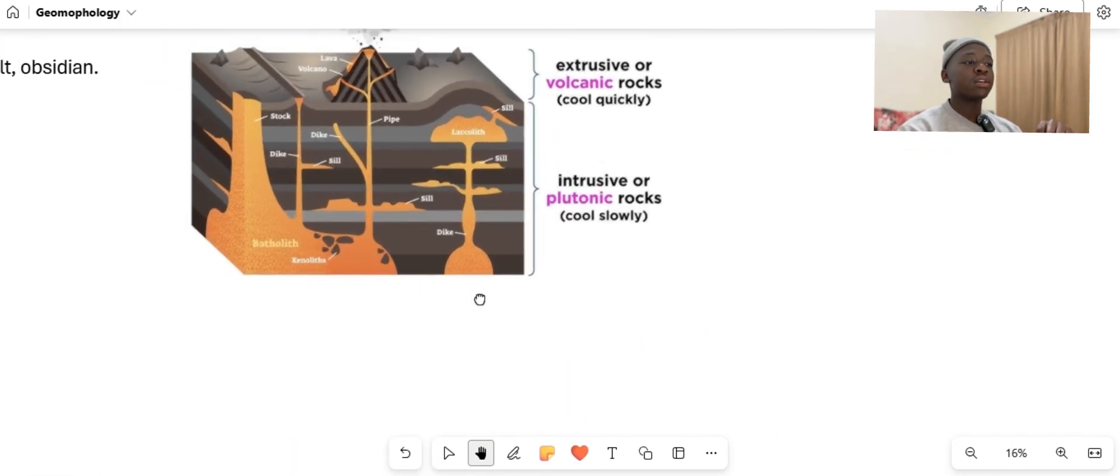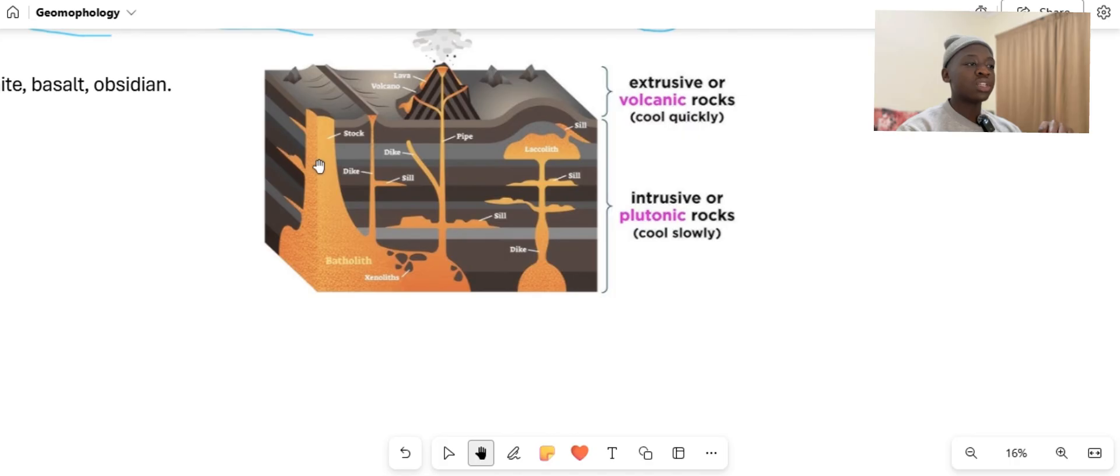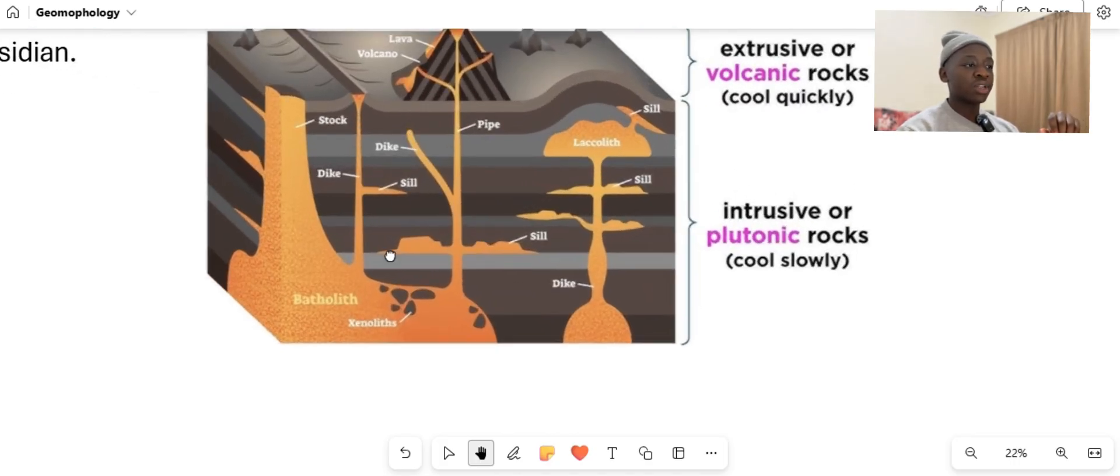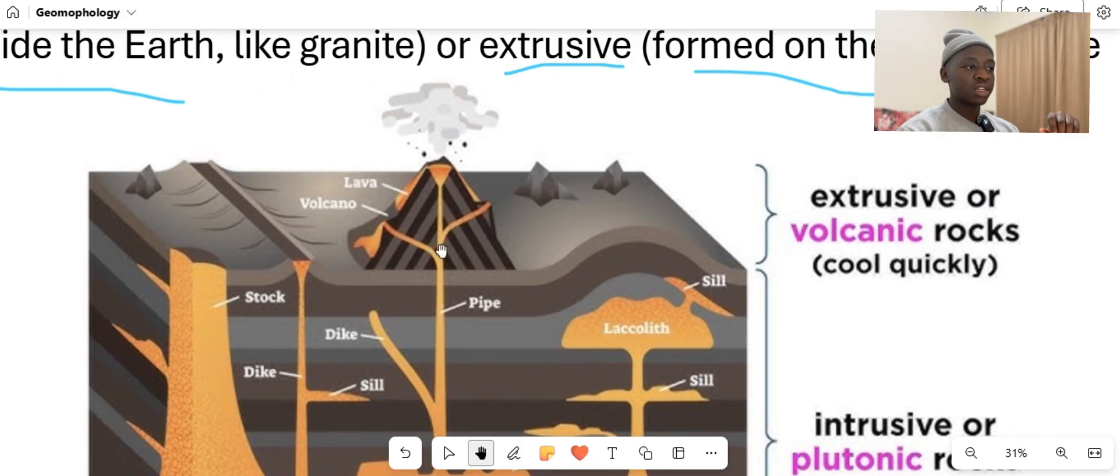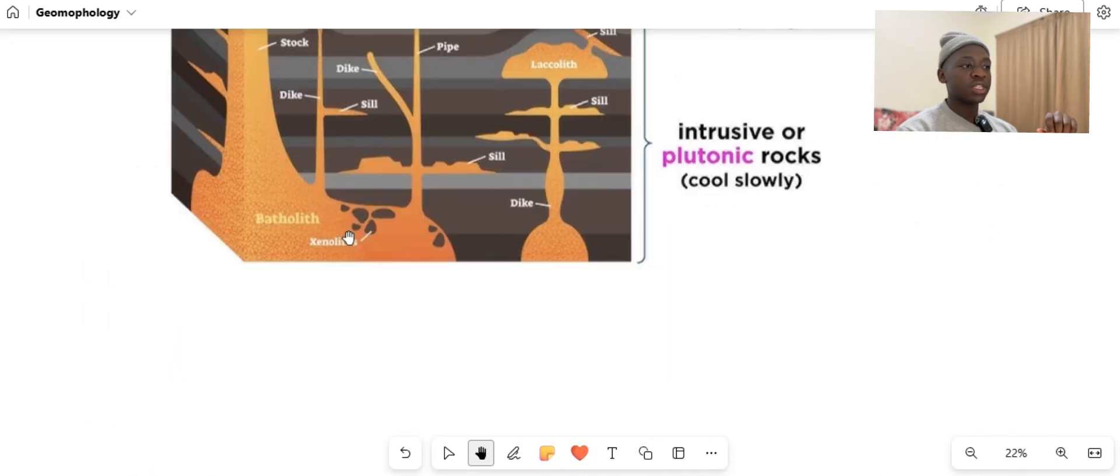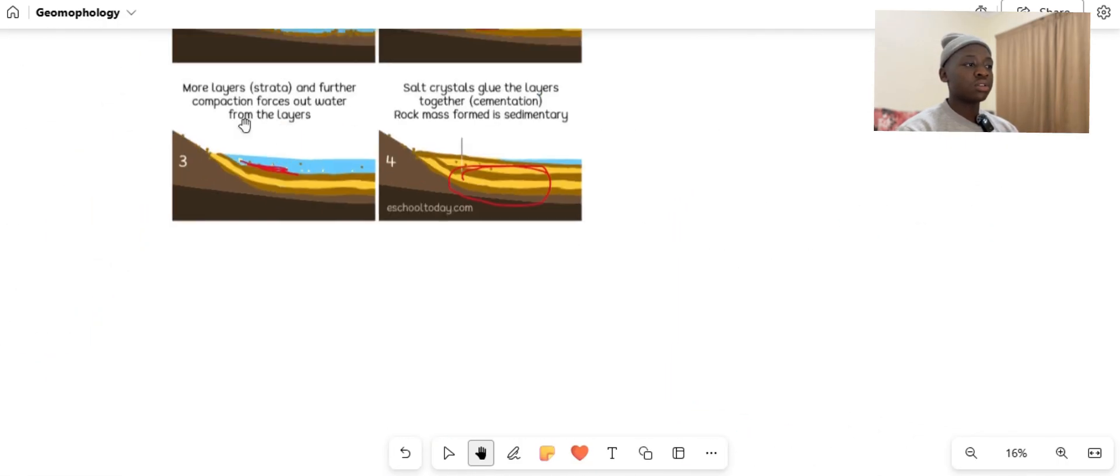This gold thing, you can see it, this thing is magma here. And when it comes outside here, it becomes what? As you can see here, the liquid comes, it becomes lava. Let's go back to the key concept.